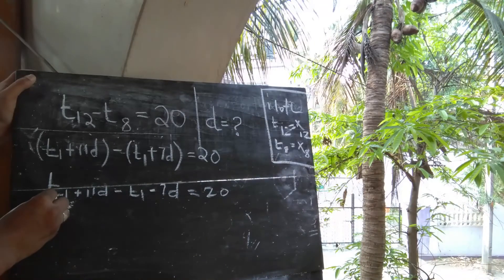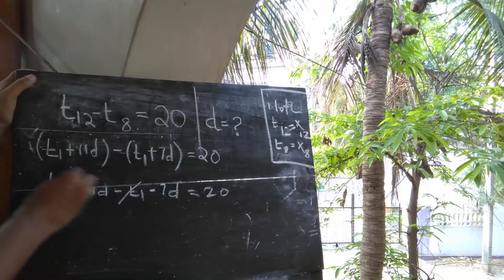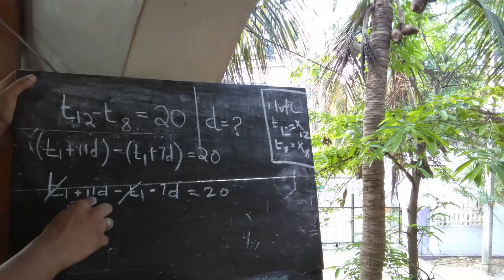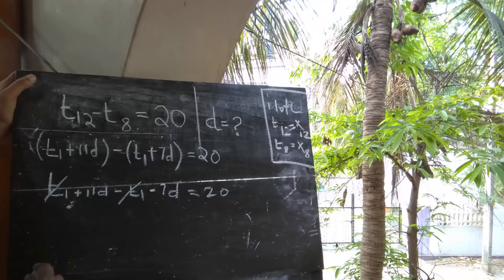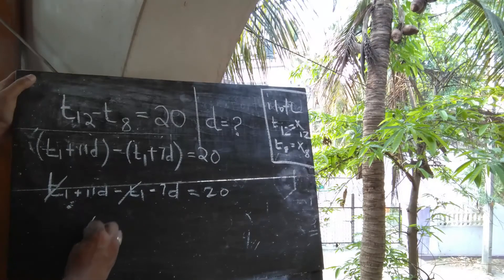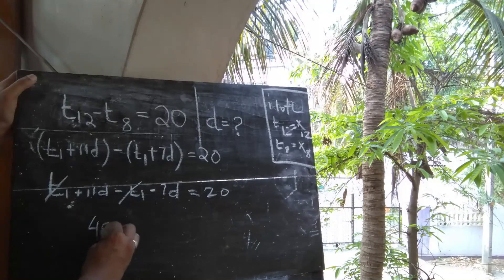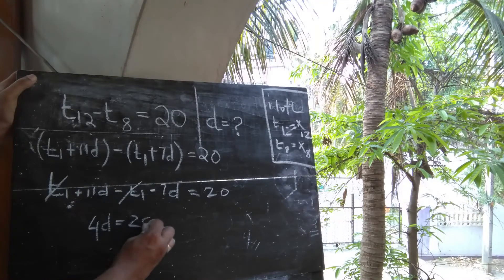Now t1 minus t1 cancel. 11 minus 7 is equal to 4d. 4d equal to 20.